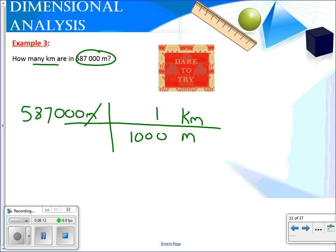So we multiply everything across the top. Five hundred and eighty seven thousand times one is five hundred and eighty seven thousand. Divided by a thousand and you get five hundred and eighty seven kilometers. This number has three significant digits. The answer has three. We're not needing to look at these numbers because these are exact. One kilometer exactly equals one thousand meters.